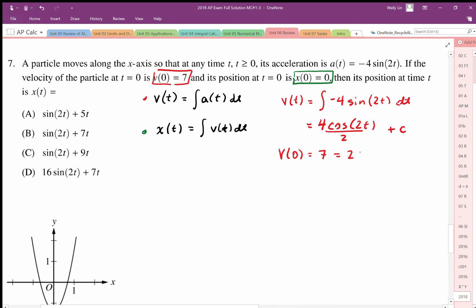So when I simplify this, I get 2 cosine of 2 times 0, which is 0, plus c. So my equation looks like this. 7 is equal to cosine of 2 cosine of 0 is 0, sorry, cosine of 0 is 1. So we end up with 2 times 1 plus c, giving us a c value of 5. And we would just be really careful with that negative. It's easy to make mistakes with that. So my v function looks now like this. v of t is equal to 2 cosine 2t plus 5.